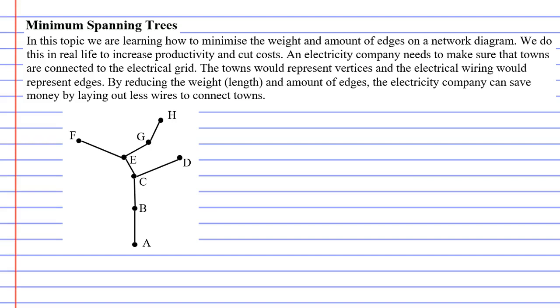A good example of this would be an electricity company. They need to connect towns to the electrical grid but they want to use the least amount of wires to save them in costs. If we look at the network diagram below, the vertices might represent the towns and the edges might represent the electrical wires.